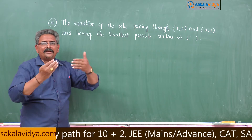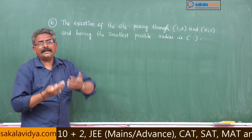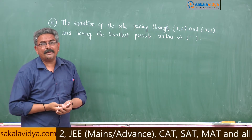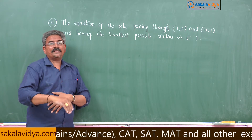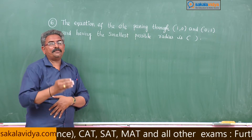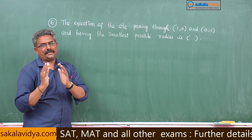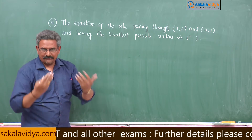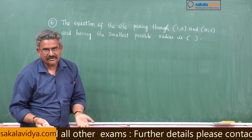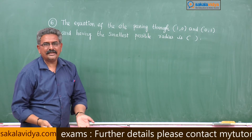The equation of the circle whose endpoints of a diameter are (x1, y1) and (x2, y2) is given by: (x − x1)(x − x2) + (y − y1)(y − y2) = 0.